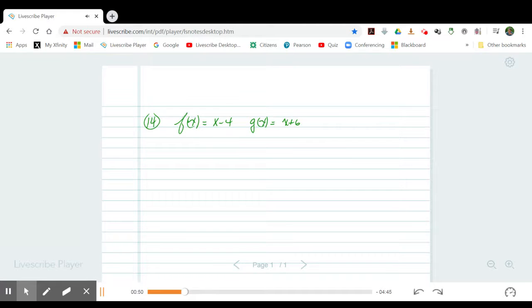They're asking us to find f plus g of the number negative 4. A couple of ways of doing this, I'm going to stick to the most basic way and not introduce anything different at this stage.